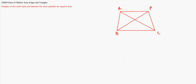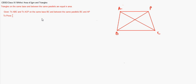It is given to us that triangle ABC and triangle ACP are on the same base BC, and they are between the same parallels BC and AP. We have to prove: area of ABC equals area of BPC.